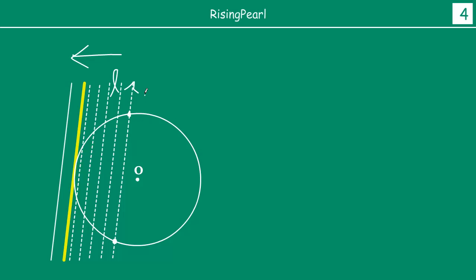Let us say the two intersection points are P and Q. As you move the secant out of the circle, you will see that the chord PQ becomes smaller and smaller and smaller. And when you get to this point — let us call it point A — the line L touches the circle only at point A. That means the chord PQ converges, becomes smaller and smaller, and finally becomes zero. At that point the line L touches the circle only at point A, and then the line L is out of the circle.